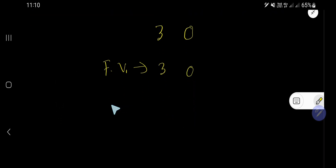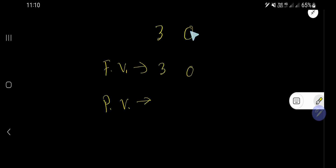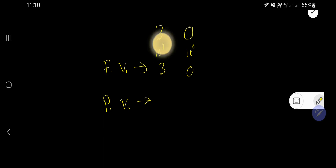Now we will find out place value. To find out place value, you need to multiply the face value by the position of that digit. This place is called the 1's place, or 10 to the power of 0 place. And this place is called the 10's place, or 10 to the power of 1 place.